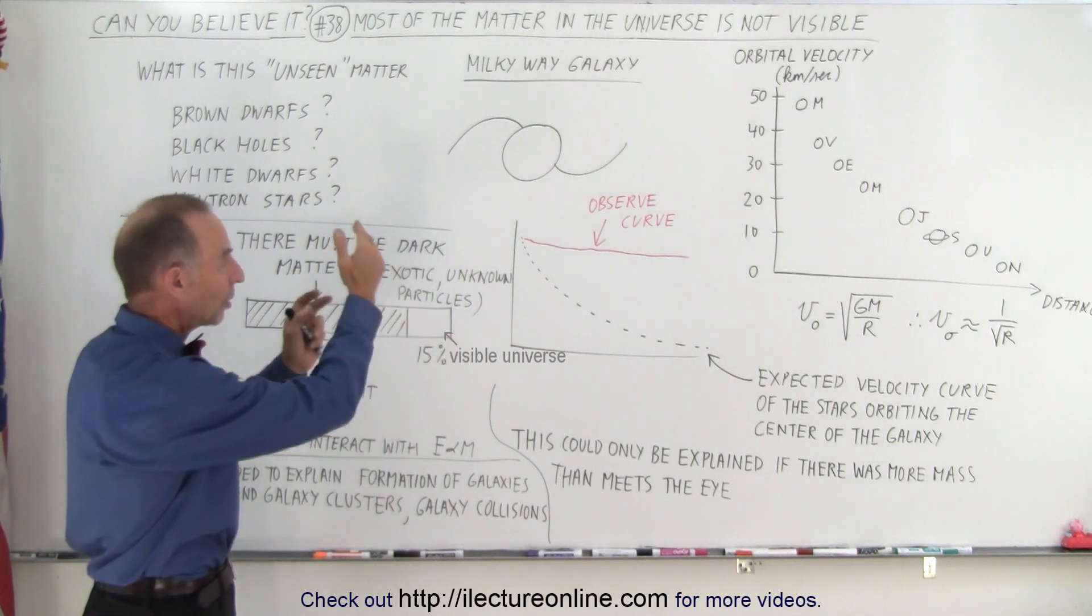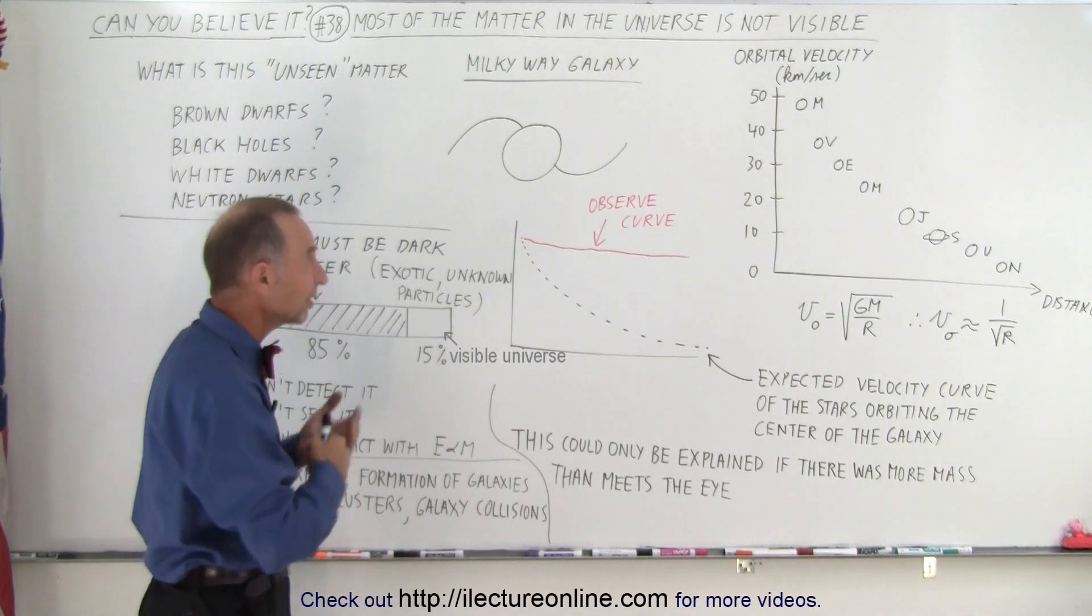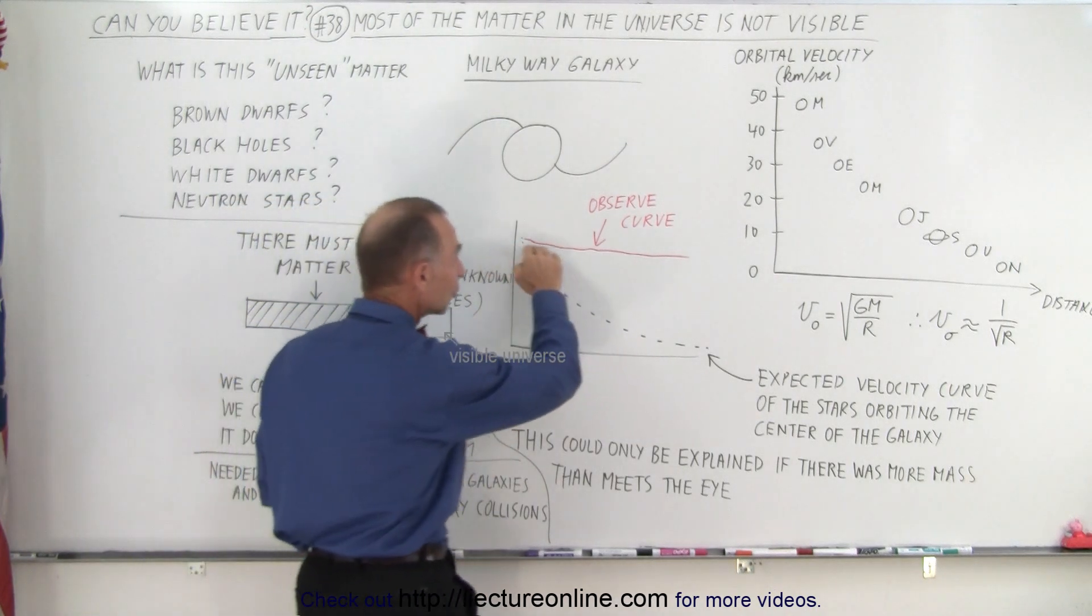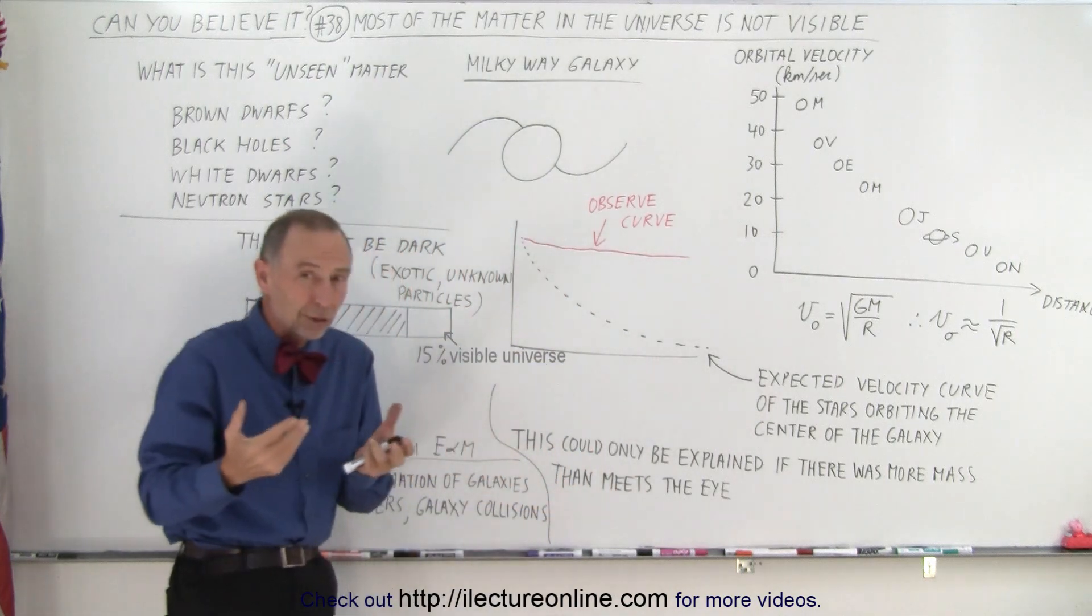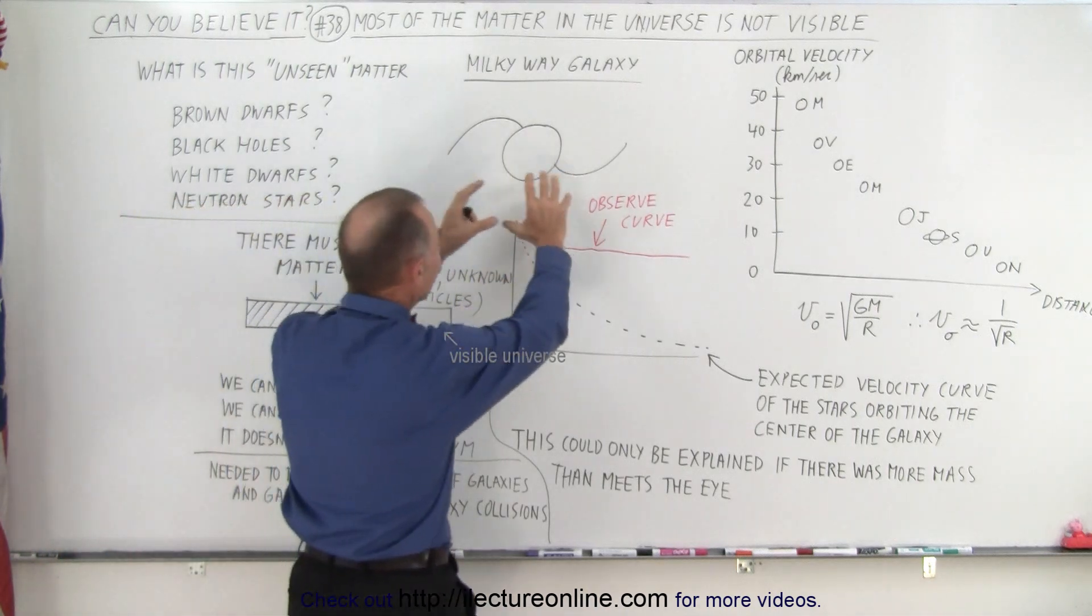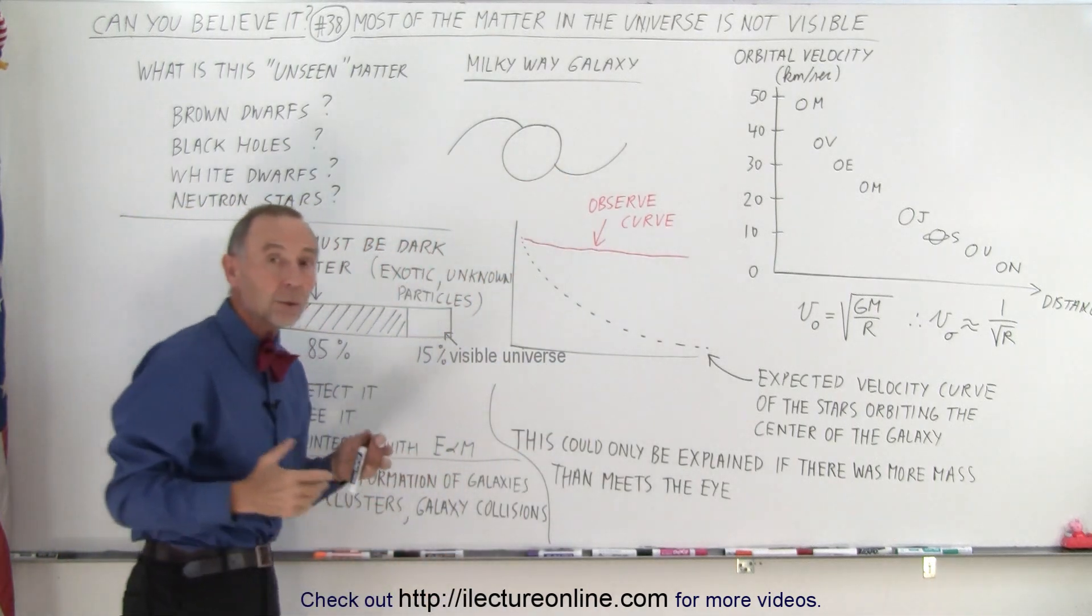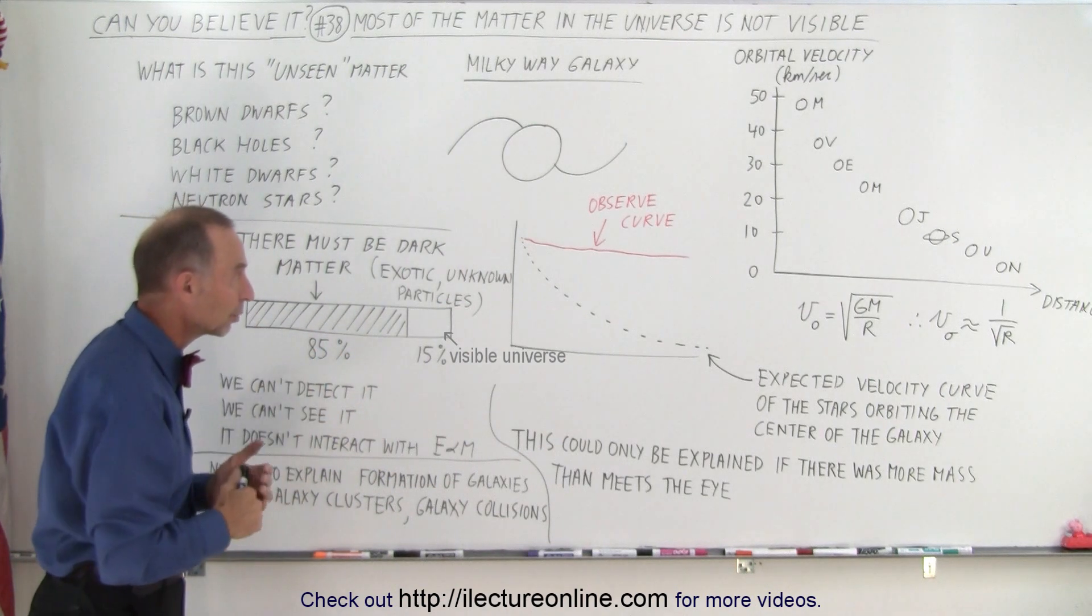Just like the planets around the Sun, we expect to see the same for the stars in the Milky Way galaxy. But instead, we see something that looks more like this. It seems like the farther out we go, the stars really don't move any slower, and there's no way that is possible unless there's more mass in the galaxy than we can account for, based upon all the stars and the nebulas and everything that we see.